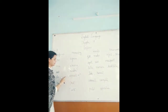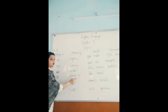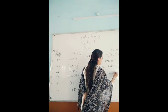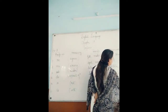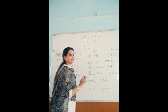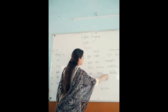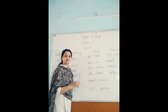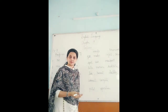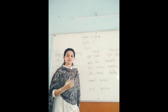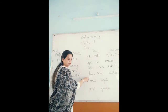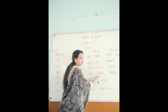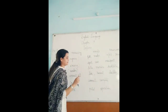Prefix dis means opposite of. If we add it to the base word like, we get dislike, and before honest we get dishonest. Dislike means not like, and dishonest means not honest. Sometimes when we add a prefix to the base word, we get antonyms — opposite words. Like and its opposite is dislike; honest and its opposite is dishonest.